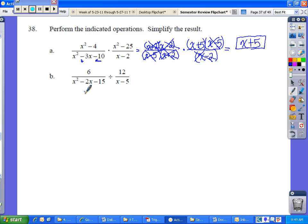For division, I still have to factor. So I'm going to first factor. So 6 over two numbers that when I multiply I get negative 15 and add to get negative 2 are 5 and 3. And since the 2 is also negative, the bigger number is negative on the bottom here. So it's going to be x minus 5 and x plus 3.